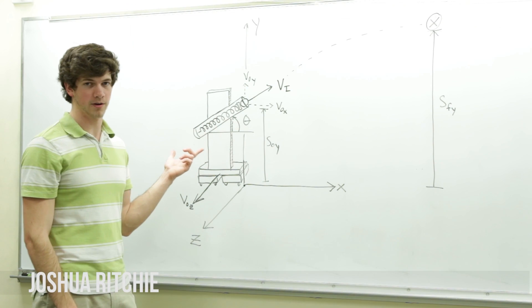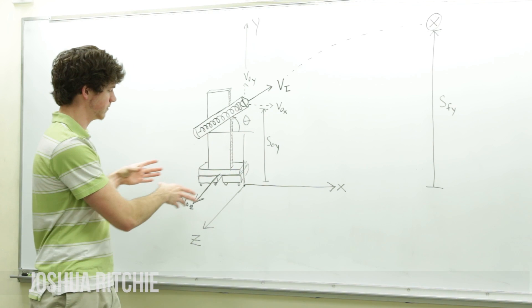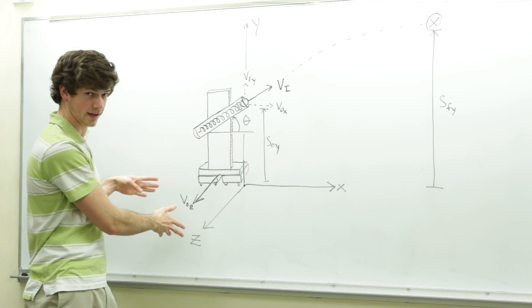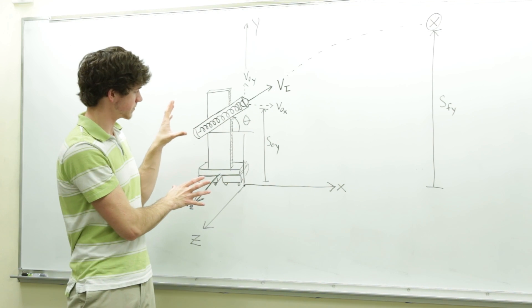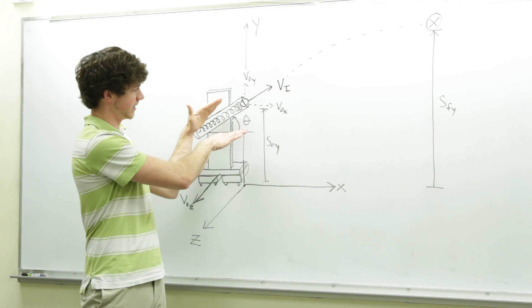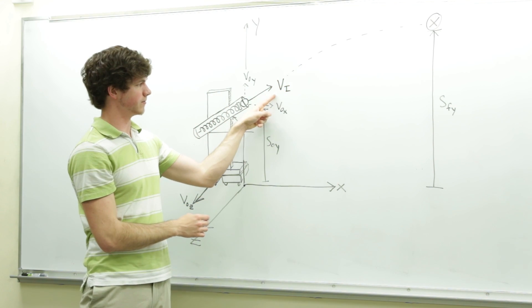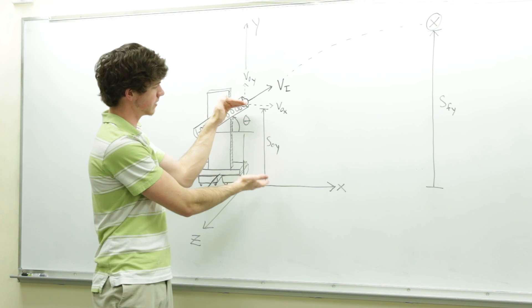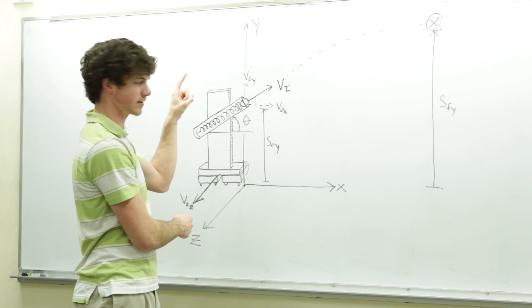So here we have a diagram of our projectile launcher. We place it on two carts to keep it moving at a roughly constant initial velocity in the Z-direction. The whole system is moving in this direction. At the same time, we're firing a ball at an angle theta with an initial velocity Vi, and it has a Y-component and an X-component. It's being launched from an initial height S-initial Y, according to this X-Y-Z axis.